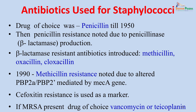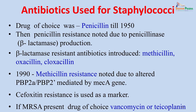The antibiotics used for staphylococci have varied over the years. Penicillin was the drug of choice until the 1950s, when resistance developed due to penicillinase (beta-lactamase) production. Beta-lactamase-resistant antibiotics were subsequently developed — methicillin, oxacillin and cloxacillin. In 1990, methicillin resistance was first noted due to alteration in penicillin-binding proteins on the surface of staphylococci, mediated by the mecA gene. Cefoxitin resistance is used as a marker — any cefoxitin-resistant organism is also methicillin-resistant. If MRSA is present, the drug of choice is vancomycin or teicoplanin.